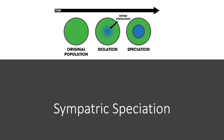Moving on to sympatric speciation. This does not involve a geographic barrier — this is just where isolation occurs within a population and then speciation occurs. A really good example of this is the hawthorn fly. Let's say we have the hawthorn fly population that normally feeds on red apples in particular.